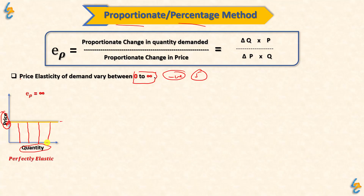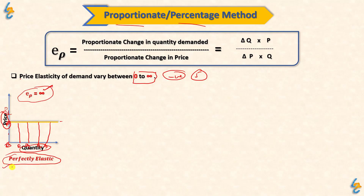The first case is perfectly elastic demand. On the Y-axis we have price, on the X-axis we have quantity. The demand curve is parallel to the X-axis — this means the firm is selling any quantity at the same price. If the price changes even a little bit, the quantity demanded becomes zero. This is called perfectly elastic demand, and the elasticity value is infinity.